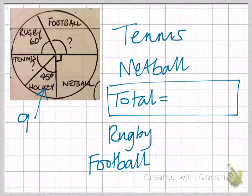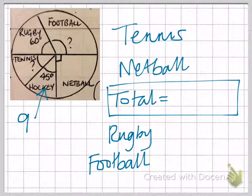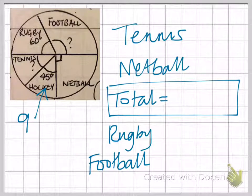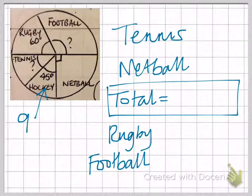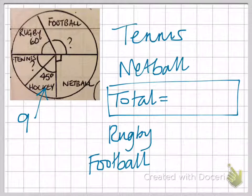Same pie chart again, but this time we're not given the total number of children. We're told how many children are in one of the sectors — we're told nine children prefer hockey. So from here, let's do it in stages to find out what goes into the other sectors.